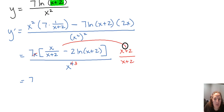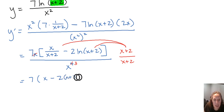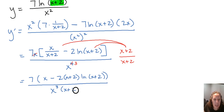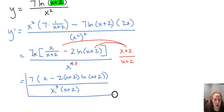Distributing x plus 2 to both terms in the numerator: we get 7 times x — distributing to the first term cancels that denominator, leaving just x — minus 2 times x plus 2 times the natural log of x plus 2, since nothing cancels on the second term. In the denominator we get x cubed times x plus 2. There's nothing common to factor out further, so that is our final derivative.